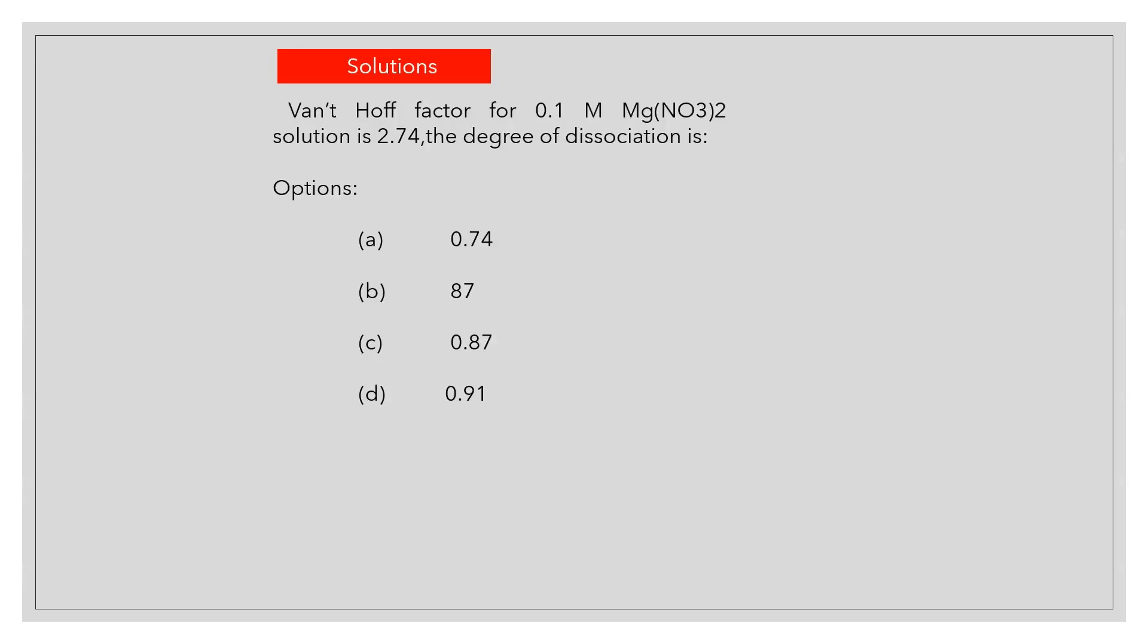Van't Hoff factor for 0.1 molar Mg(NO3)2 solution is 2.74. The degree of dissociation is? Answer B: 87%.